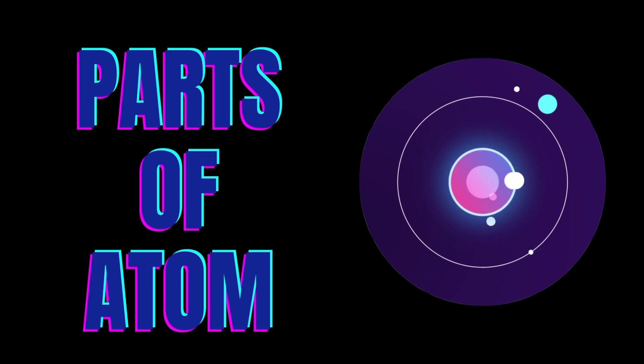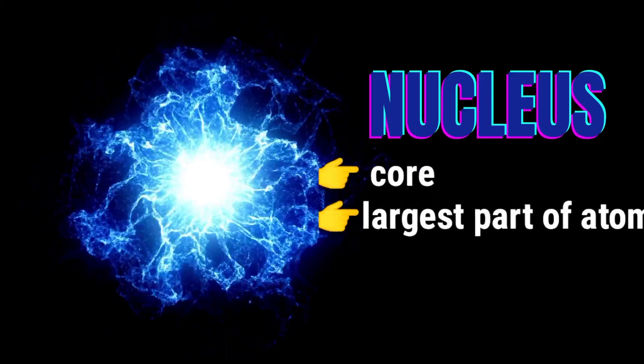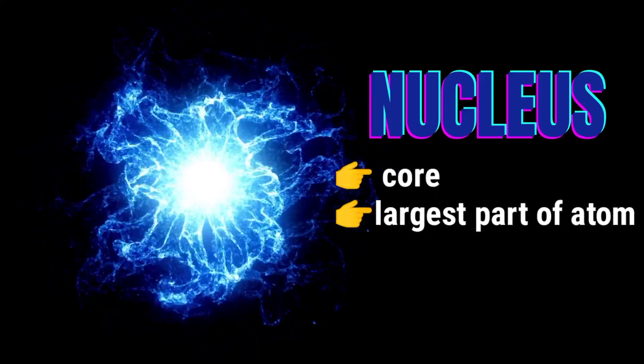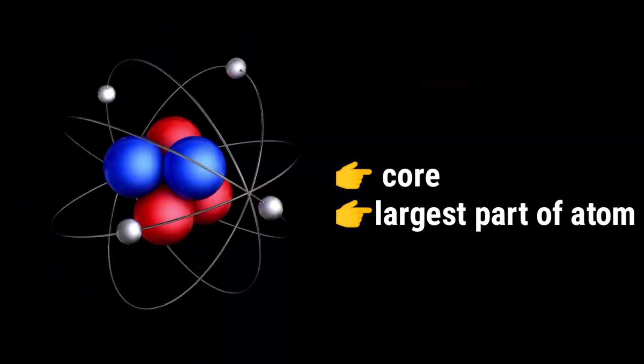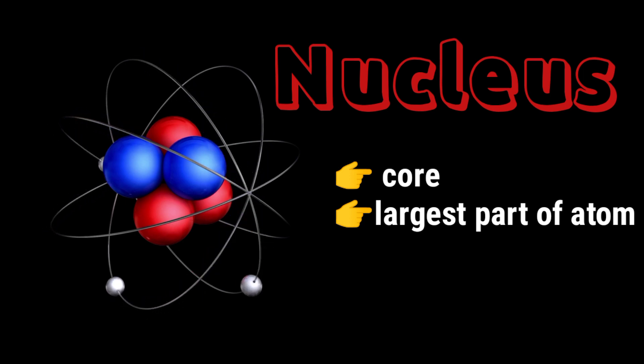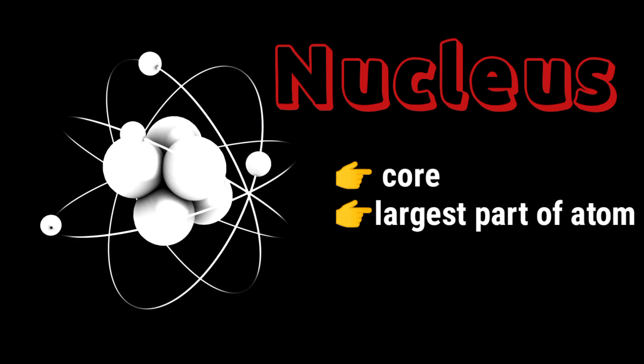Parts of an Atom. Nucleus: Every atom has a core called nucleus. The nucleus is largest part of an atom, about 99.9% of its mass. Within the nucleus are very small particles called protons and neutrons. Electrons are in orbit around the nucleus.